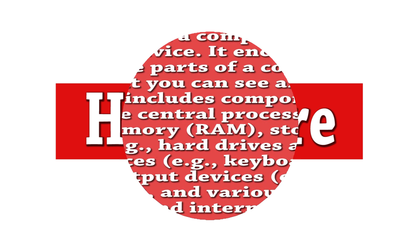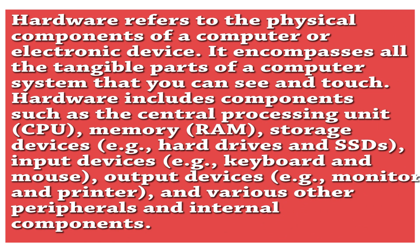First I will talk about hardware. Hardware refers to the physical components of a computer or electronic device. It encompasses all the tangible parts of a computer system that you can see and touch. Hardware includes components such as the central processing unit (CPU), memory (RAM), and storage devices like hard drives and SSDs.